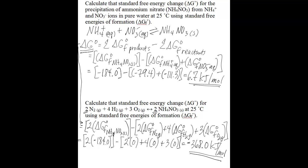Notice that this value is different than the standard free energy change value from your first problem. To find the standard free energy of formation from the standard free energy change value you just found for the second problem — the formation of ammonium nitrate solid from nitrogen gas, hydrogen gas, and oxygen gas — what you need to do is divide that value by 2.